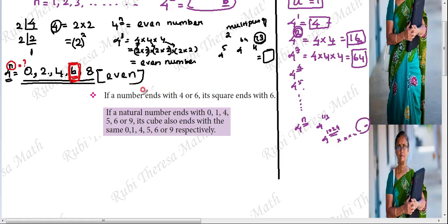Here is the key concept: if a number ends with 4 or 6, its square ends with 6. So if a number ends with 4 and you square it, the result ends with 6.